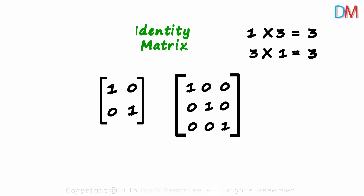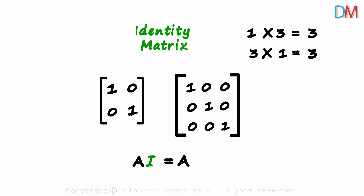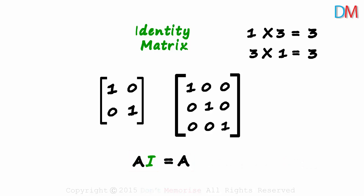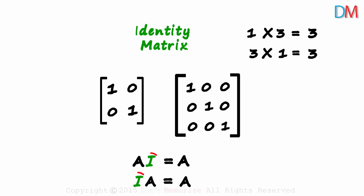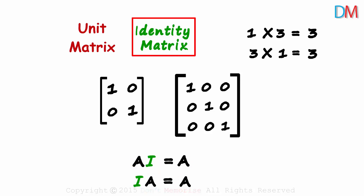Let's say we have a square matrix A. Matrix A multiplied by I will give us matrix A. We also know that matrices are non-commutative. A times I gives us A — but does I times A also give us A? Yes, I times A will also give us A. The identity matrix, when multiplied with any matrix, gives us that same matrix back. It is also called the unit matrix.